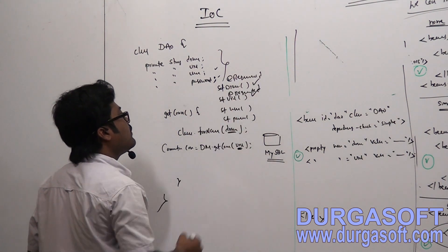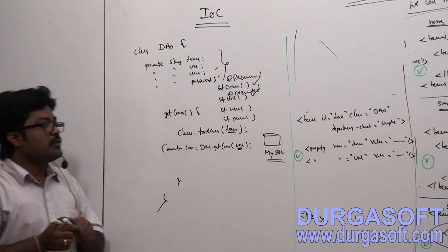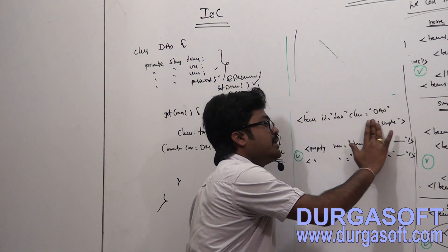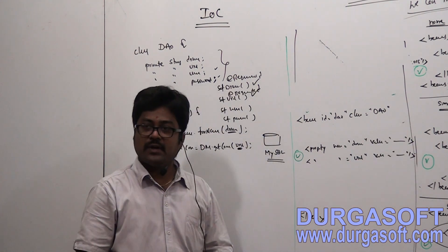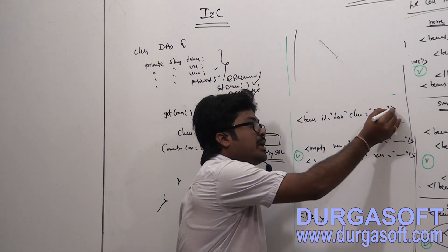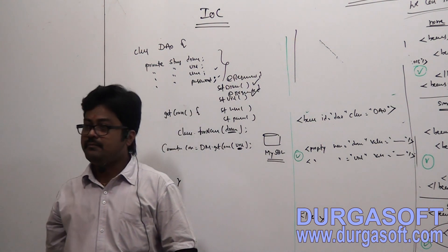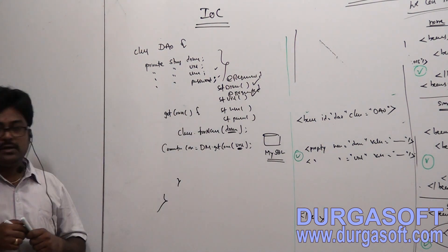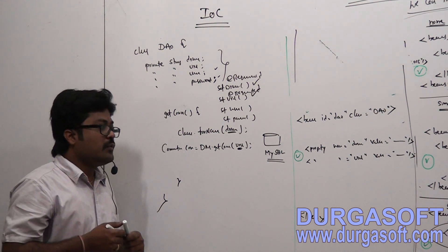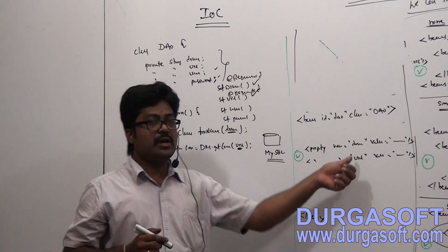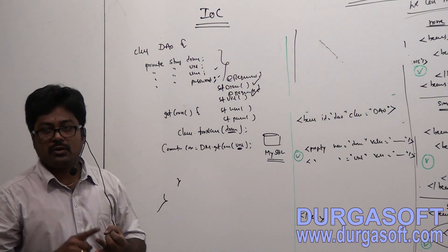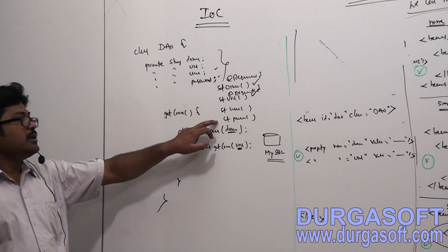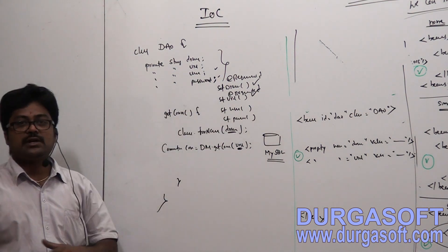If you apply @Required on those 2 methods, the container will force you to pass only those 2 values. You don't need to apply any dependency checking in the XML file. The container will only require driver and url. If you want to make the other 2 setters mandatory as well, you can apply @Required on all 4 setter methods.